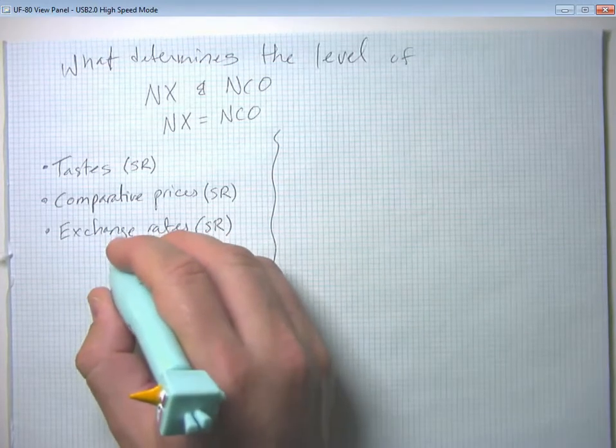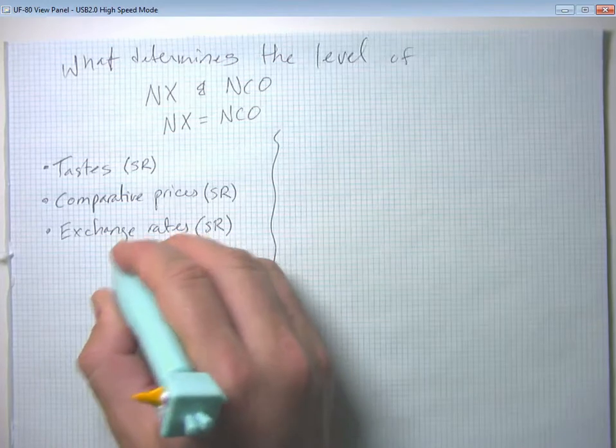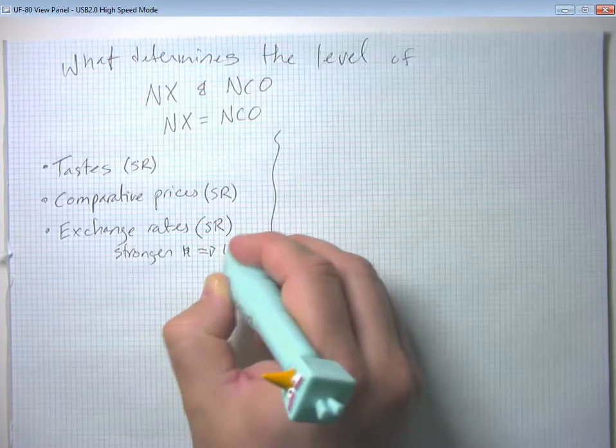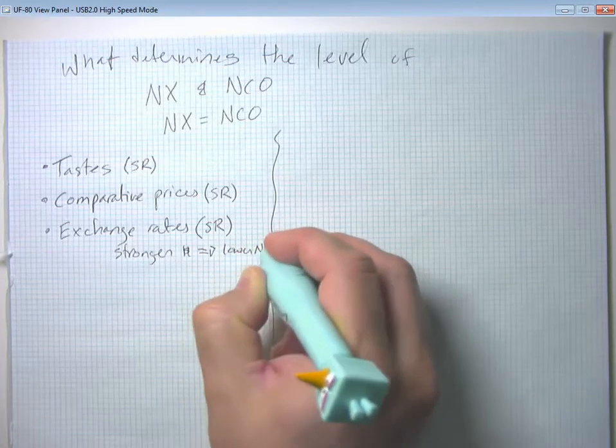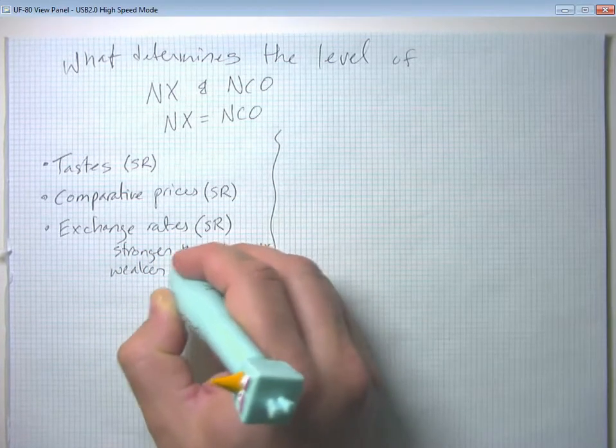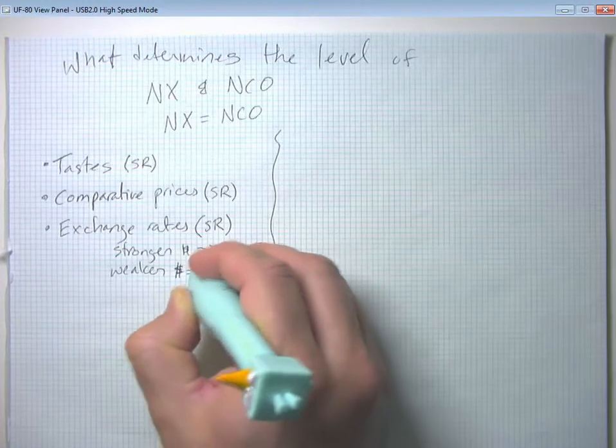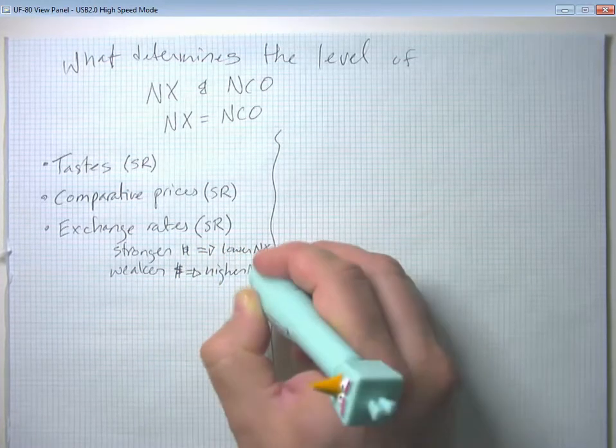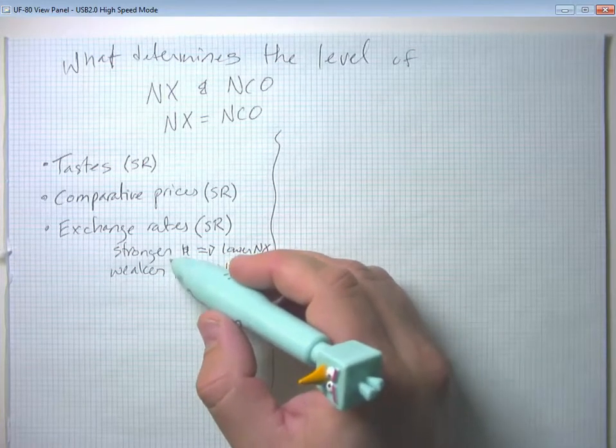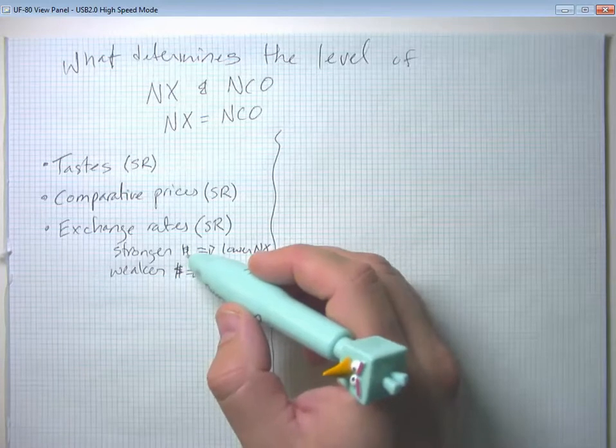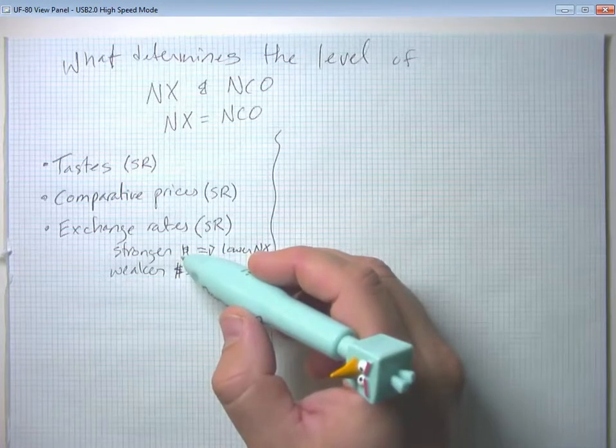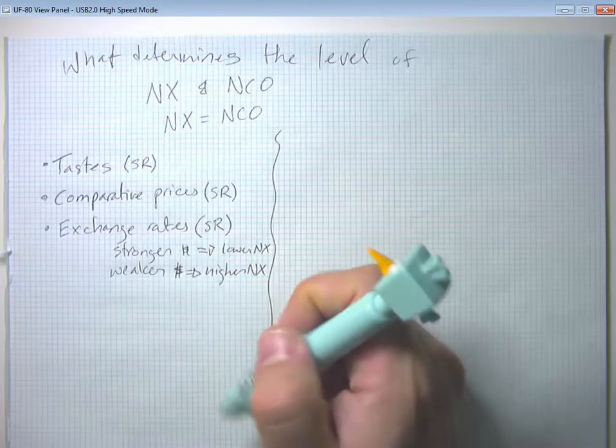We're going to concentrate in the long run here. And so what we're going to say here is that in general, and we'll talk about exchange rates more later, a stronger dollar is going to mean lower net exports, and a weaker dollar is going to mean higher net exports. Because essentially, a stronger dollar makes U.S. goods look more expensive to foreign buyers, so they're going to buy less. And a stronger dollar makes foreign goods look cheaper to U.S. consumers, so they're going to buy more, or vice versa for a weaker dollar.